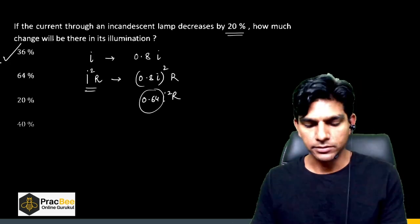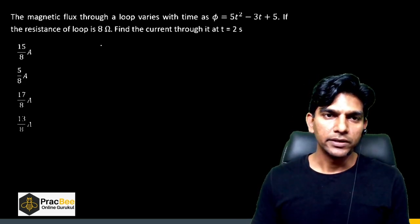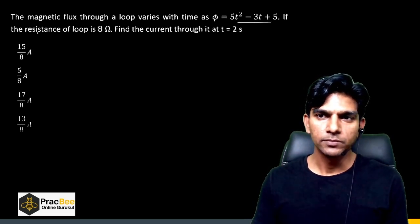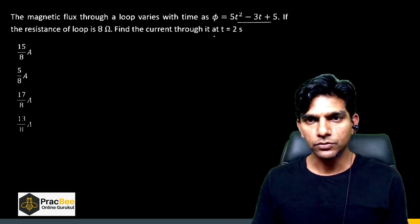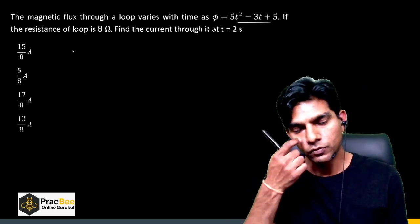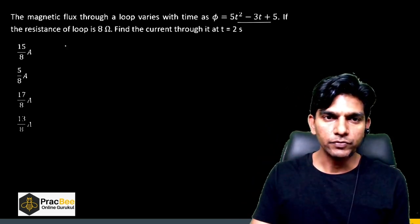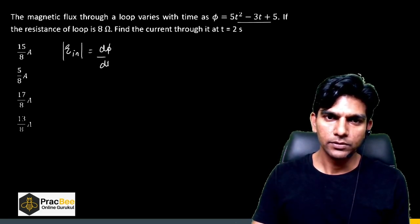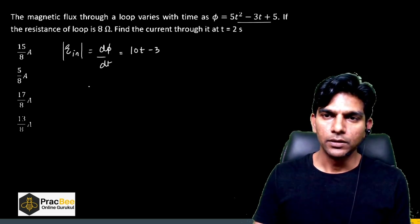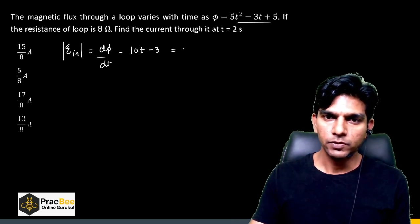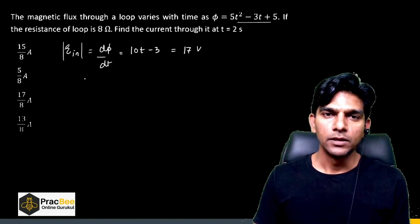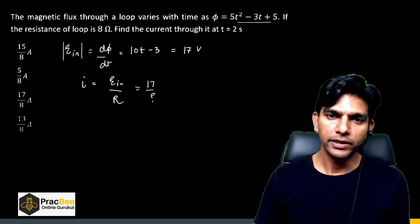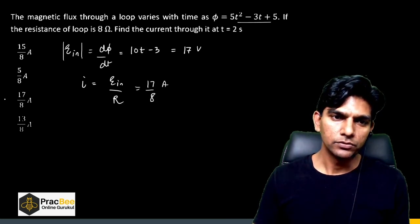The next question is from Electromagnetic Induction. Magnetic flux through a loop varies with time. The induced EMF = |dΦ/dt| = 10t − 3. At t = 2 s, EMF = 17 V. With resistance R = 8 Ω, the induced current = 17/8 A. Option C is the right answer.